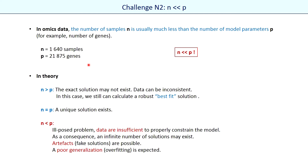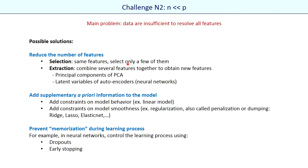Now let's talk about the second challenge we often encounter with omics data analysis. In omics data, the number of samples is usually much less than the number of model parameters — the number of genes in our case — and the difference in sizes may be more than ten times. In theory, we can train a mathematically correct model only if the number of parameters is less than or equal to the number of samples. Otherwise the data are insufficient to properly constrain the model, the problem is ill-posed, and we may obtain an infinite number of solutions which are not real solutions but artifacts. Usually the model is strongly overfitted in this case.